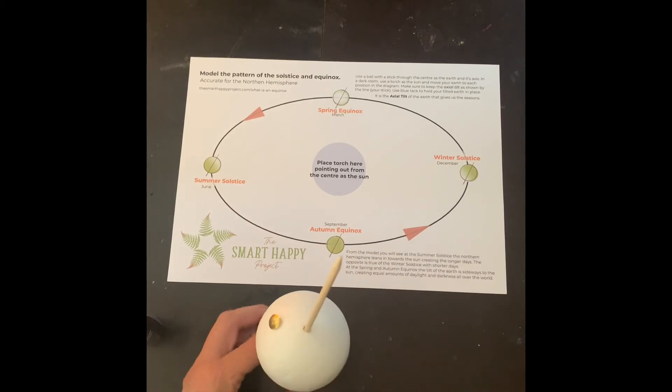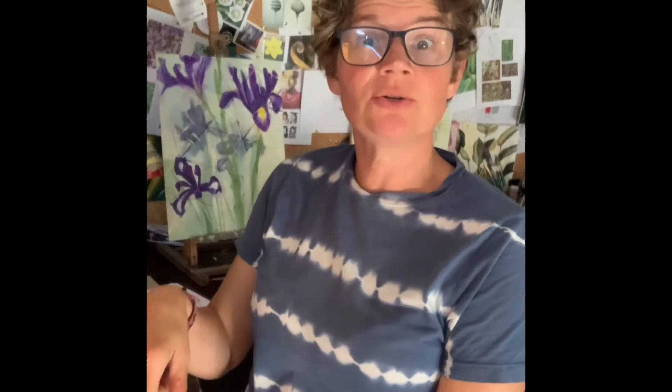There you go. And that my beautiful friends is the solstice model. So as we saw, it illustrates the solstices are opposite each other and the equinoxes.